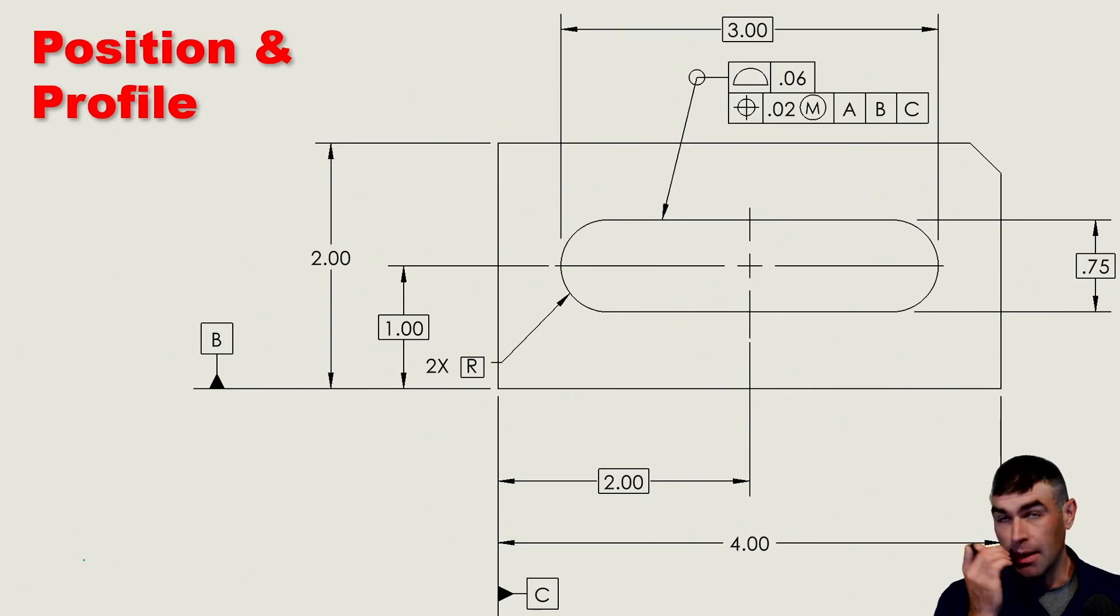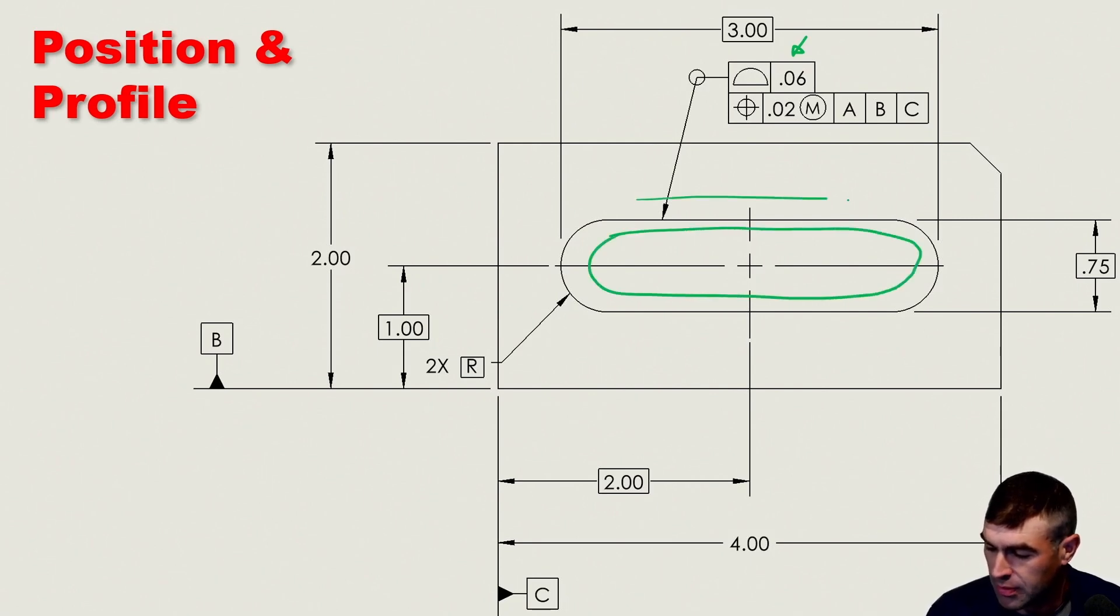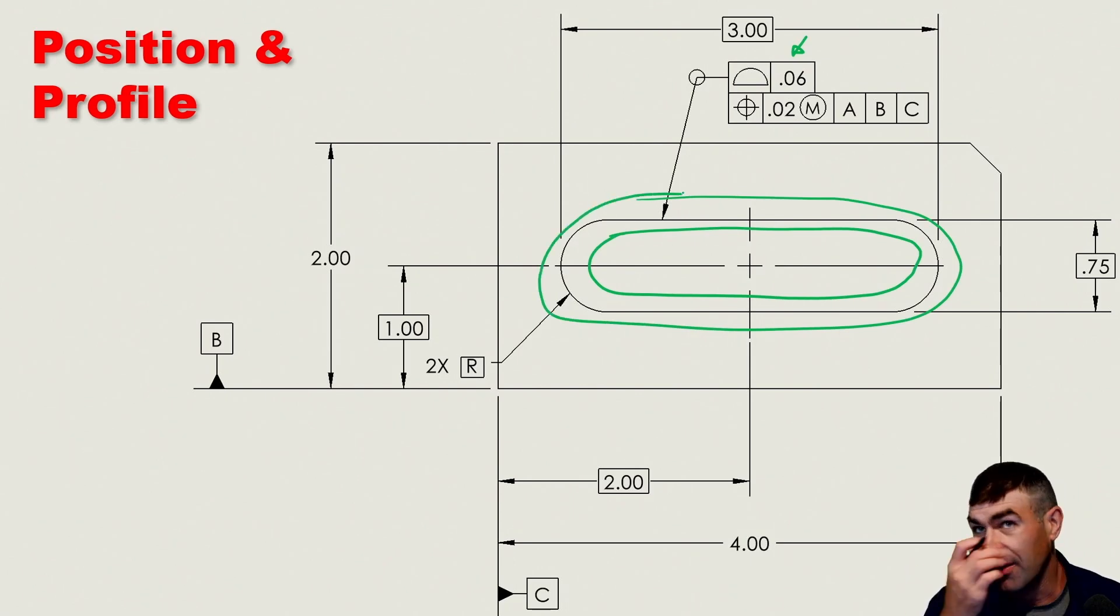Say you had a pattern of non-functional slots that are there for, like, cooling, like air flow or something. You could conceivably control them all as a pattern kind of together with composite profile. So, okay, now this is a kind of weird one. This is using position and profile together. What's going on here, as you can imagine, you're going to control the form of that slot to the 60,000th, the general kind of slot type shape. I don't know how you do that on a surface plate with manual stuff. I'm pretty sure you need a CMM, but maybe not. I don't know.